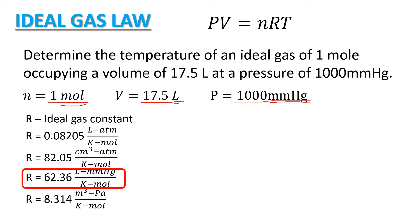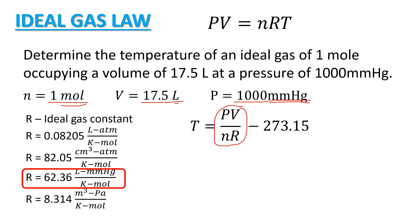Deriving the temperature of our gas will be PV over nR and what we will get here is simply just the absolute temperature. So, we subtract it by 273.15 to convert the absolute temperature going back to degrees Celsius. So, substituting the values, we will have the pressure of 1000 mmHg multiplied by the volume 17.5 liters all over the product of 1 mole times the R.